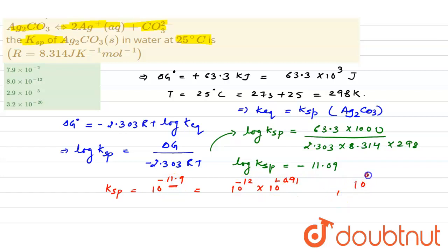So Ksp can be written as 8 × 10^(-12). This would be the answer. In the options, you will see the second option represents the correct answer. Thank you so much.